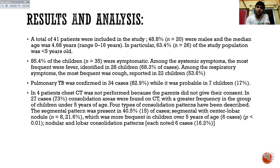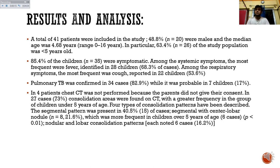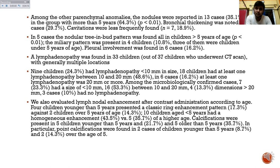Results were found among 41 patients, of whom 20 were male and 35 were symptomatic. The most common symptom was fever, seen in 28 children. Pulmonary TB was confirmed in 34 patients. Four patients did not undergo CT as they did not give consent. Several types of consolidation were found; the most common was segmental pattern, found in 15 cases. Nodular and lobar variants were also found. Centrilobular nodules were found in 13 cases, and tree-in-bud pattern in five cases. Lymphadenopathy was found in 33 children on CT.